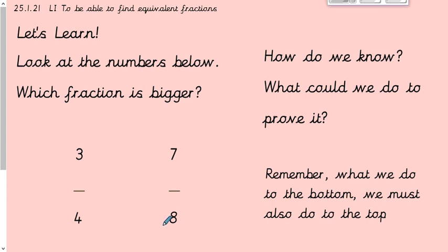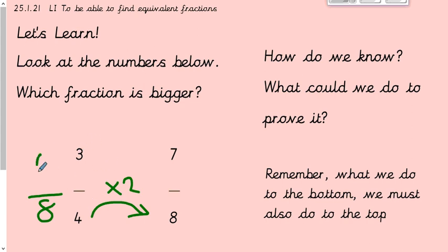So we times four by two to get eight, and remember you've got to do the same to the top — three times two is six. Now we can compare them because they've got the same denominator. This is called a common denominator — when the denominators are the same you can compare the fractions, otherwise they're not the same fraction.